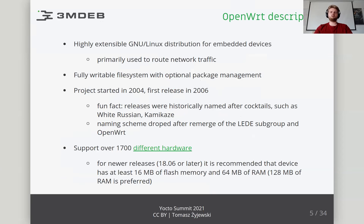The OpenWrt project is a Linux operating system targeting embedded devices. Instead of trying to create a single static firmware, OpenWrt provides a fully writable file system with package management. This frees everyone from the application selection and configuration provided by the vendor and allows customizing the device through the use of packages to suit any application. The OpenWrt project was started in 2004, after Linksys built the firmware for the WRT54G series of wireless routers with code licensed under the GNU.